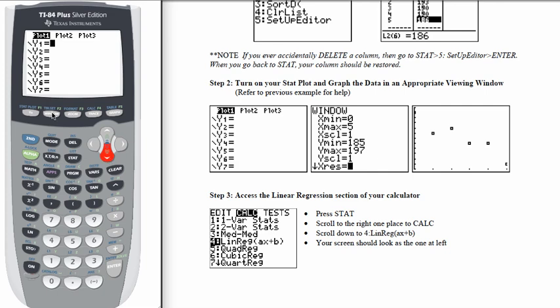Then let's check our window. Appropriate viewing window for this data is 0 to 5 X min to X max, 185 to 197 Y min to Y max, and then hit graph. And that should give you the same shape that you see in the screen over here on the right.